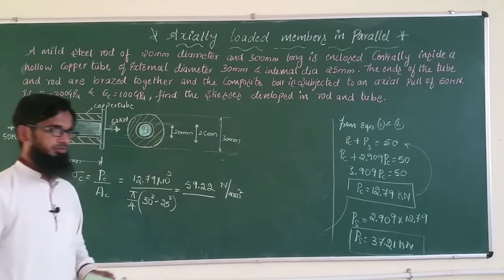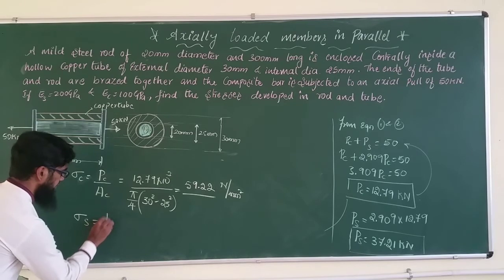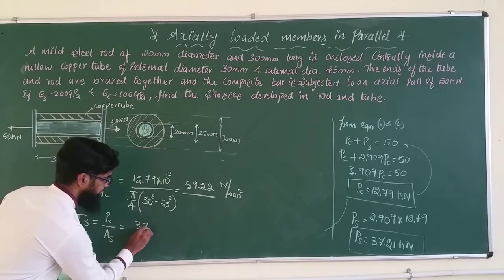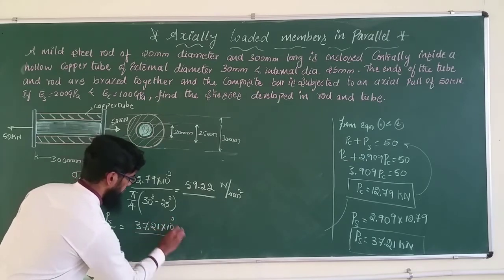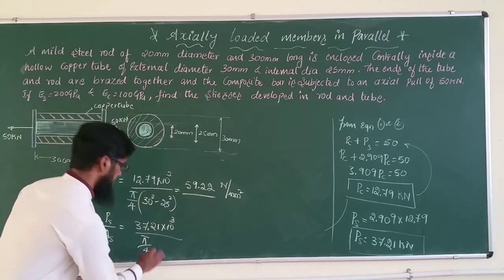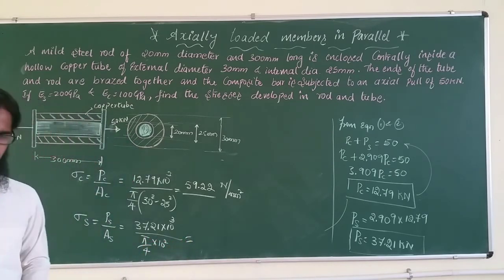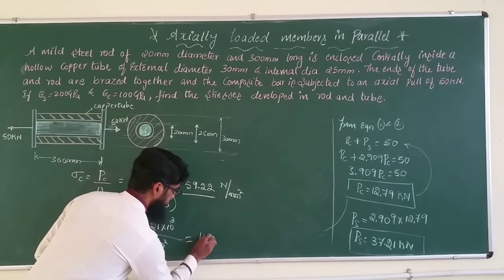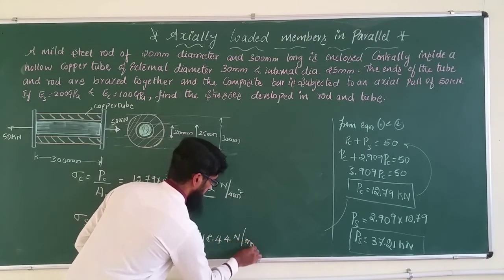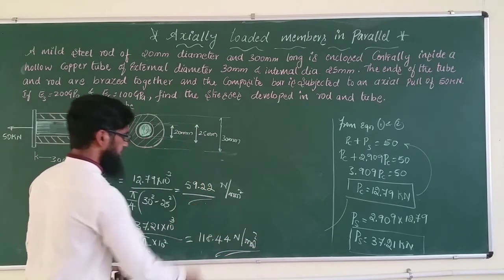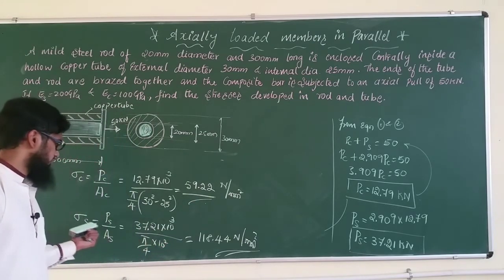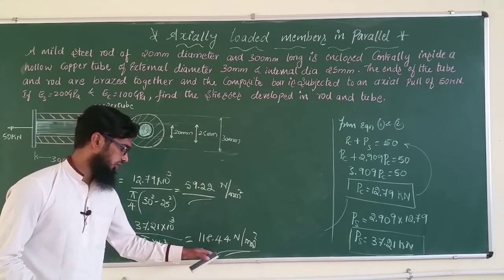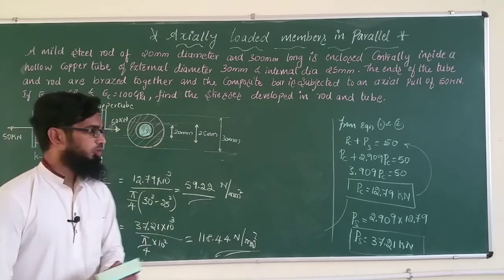Stress in steel: σ_s = P_s / A_s = (37.21 × 10³) / [π/4 × 20²] = approximately 118.44 N/mm² (MPa). So the stress in the copper tube is 59.22 MPa and the stress in the steel rod is 118.44 MPa.